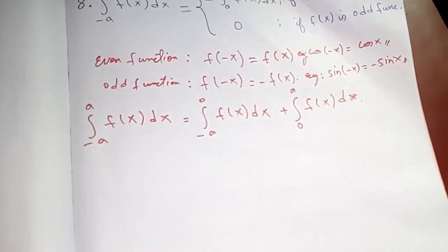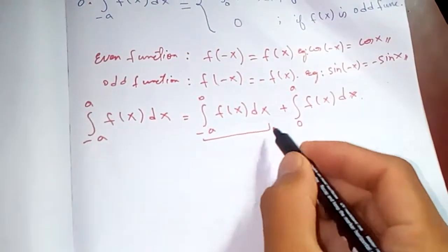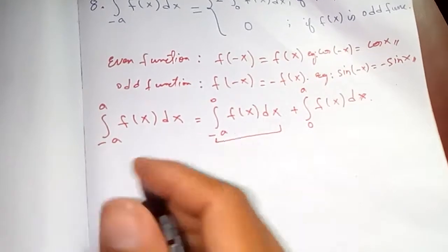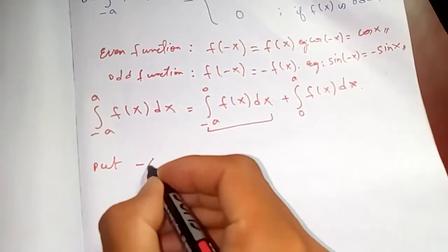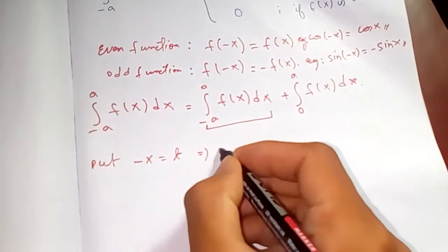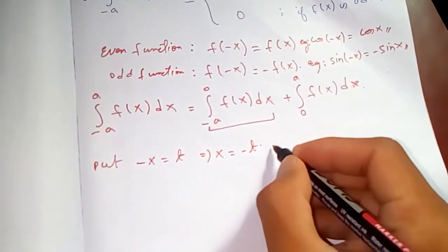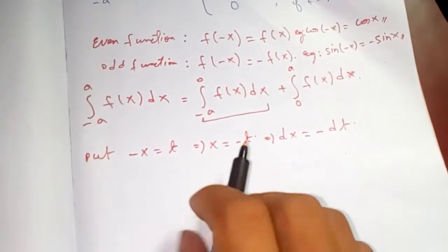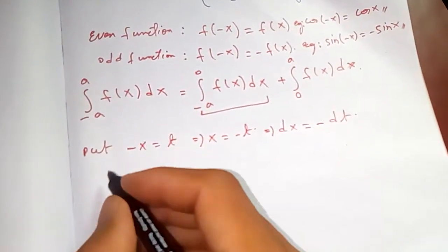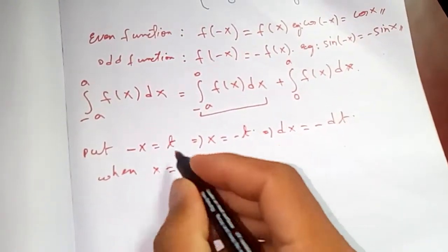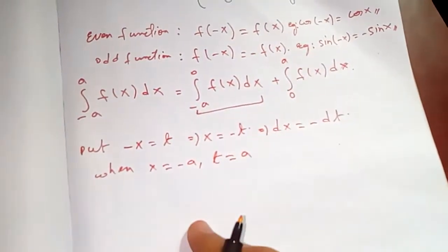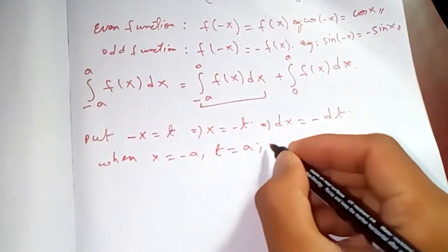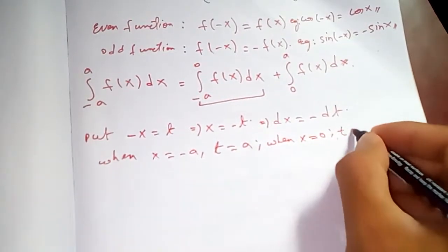We are going to evaluate the first part — the integral from minus a to 0 — because it has a negative sign in the limits. We use the substitution: let negative x equal t, meaning x equals negative t, so dx equals negative dt. When x equals negative a, t equals positive a, and when x equals 0, t equals 0.